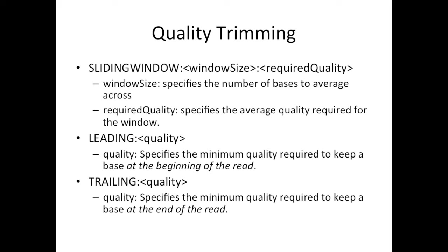You can also trim reads based on quality. Sometimes you can have dips in quality in the middle of your read or towards the end of your read. In order to eliminate these from your library, you can use quality trimming, the first of which is Sliding Window. This takes an average across a window size, so just because you have a drop in quality for a single base pair doesn't mean you chop off the end of the read. Instead, you need a consistent drop in quality based on your window size and quality threshold. Because Illumina has poor sequencing at the beginning and end of reads, you can specify a quality for trimming the leading base pairs as well as the trailing base pairs.